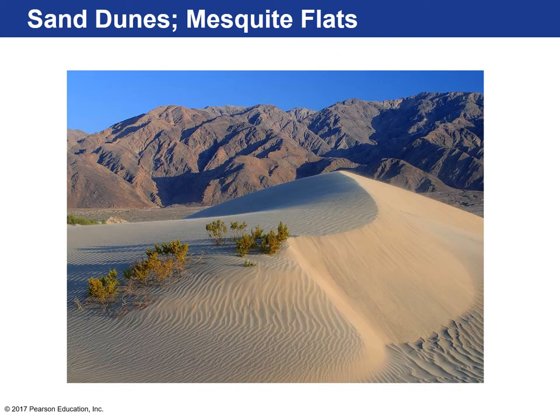Here are the Mesquite Flats sand dunes that you can find in the park. There are a number of different sand dune areas in this national park, although they don't cover a great area. Sand dunes are beautiful — you can go over there, take a picture, and marvel at moving sand dunes — but they're actually a really small portion of the park. There are dune fields distributed throughout Death Valley National Park, but it's a very small fraction of the entire area.